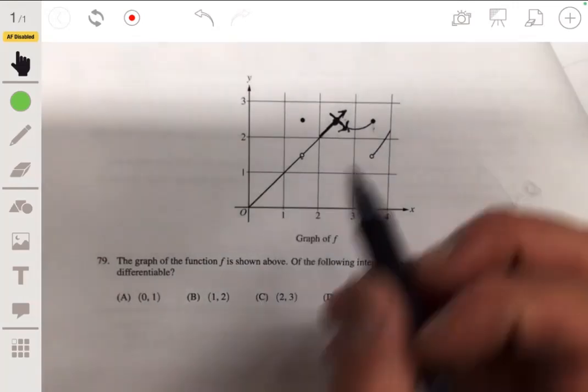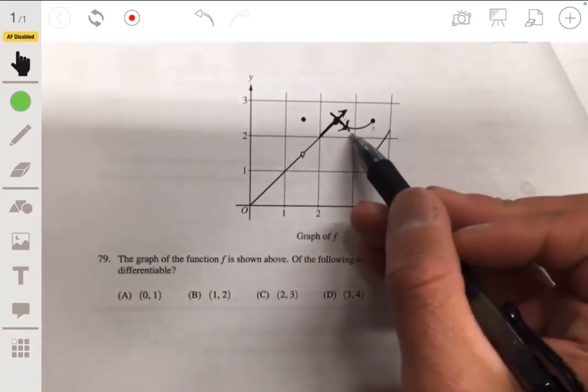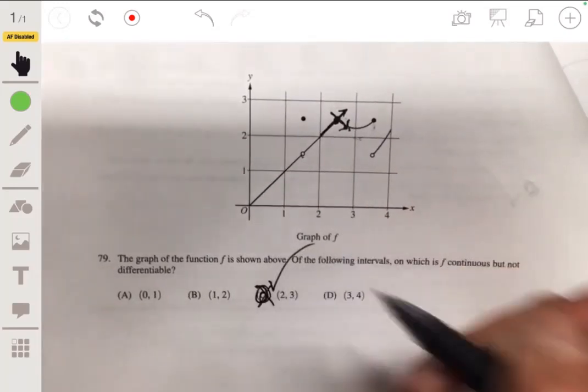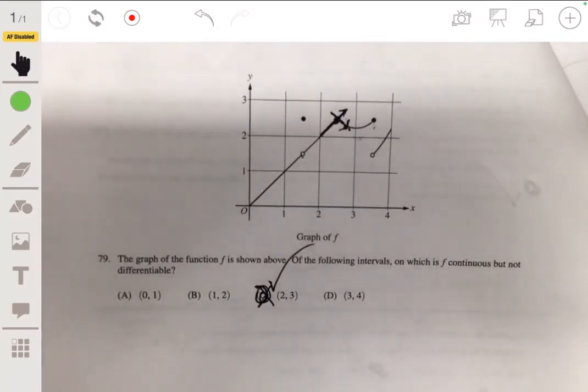So let's look at the interval that has that. From two to three-ish, we'll say. All right, so then the answer will be C. All right, so there you go.